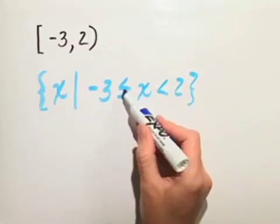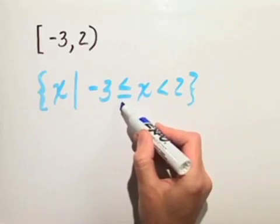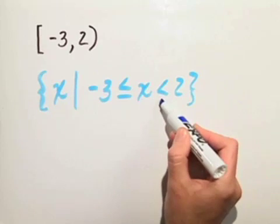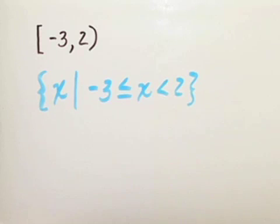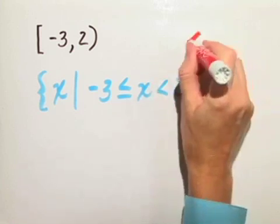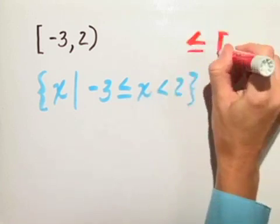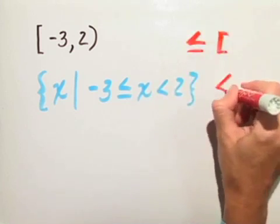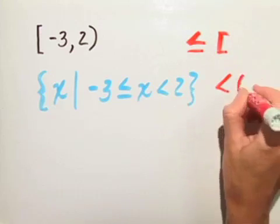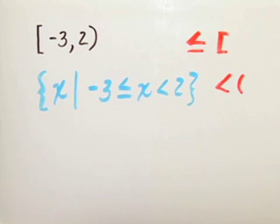Now, notice I put a less than or equal to sign here, but just a strict inequality, the less than sign, here. The reason that we do that is because the less than or equal to sign is translated with a bracket. However, the strict inequality less than is translated with a parentheses.